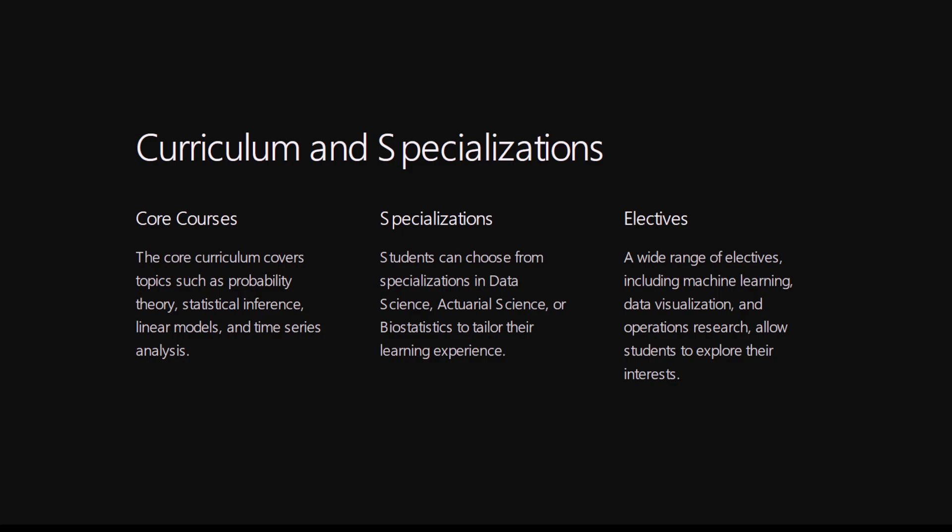You have core courses, specializations, and electives. Core courses are compulsory subjects in the curriculum, which include probability theory, statistical inference, linear models, time series, and many more. Specializations are available in areas such as data science and biostatistics, among others.